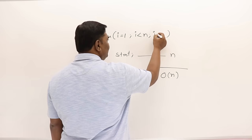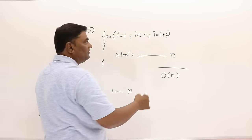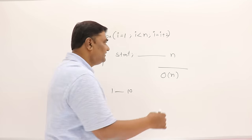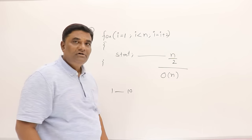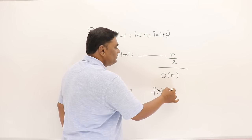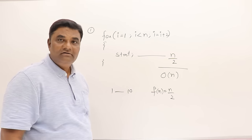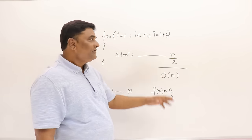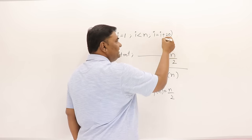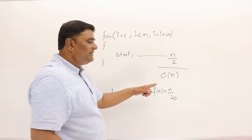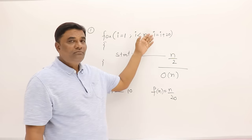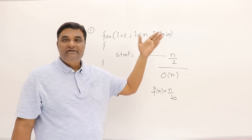If the loop starts from 1, the condition is i less than n, and i is incremented by 2, then this statement will not repeat n times but n/2 times. If the function is n/2, what is the degree of the polynomial? It is n. So it is O(n) again. Even if it is incrementing by 20, the degree of the polynomial is still n, so this is also O(n).